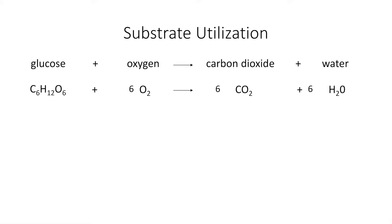And you see that when one molecule of glucose is burnt, you use six oxygen and form six molecules of carbon dioxide and six molecules of water. With this you can calculate the RER — the respiratory exchange ratio — which is the oxygen that you consume divided by the carbon dioxide that you produce. So in this case, six divided by six is one.